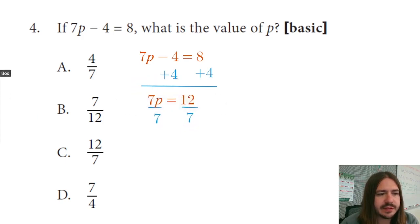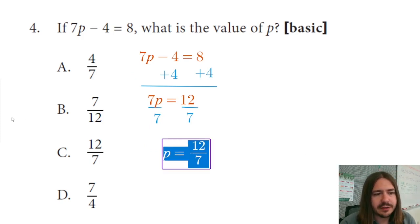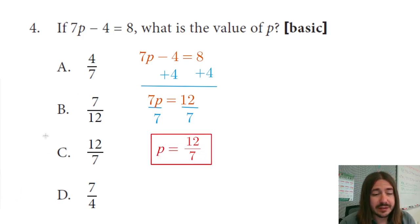So after we divide both sides by 7, that's going to give us P equals 12 sevenths. Can't really reduce that. So that's just going to be our answer. And it looks like we do have that as an answer choice. So the correct answer for number four, it looks like it's going to be C.